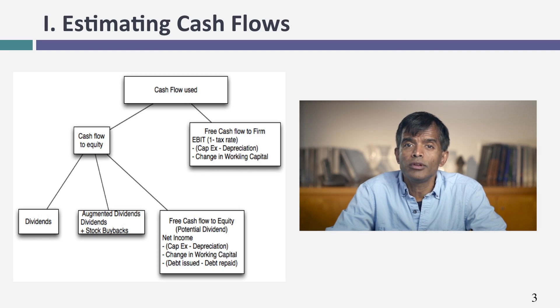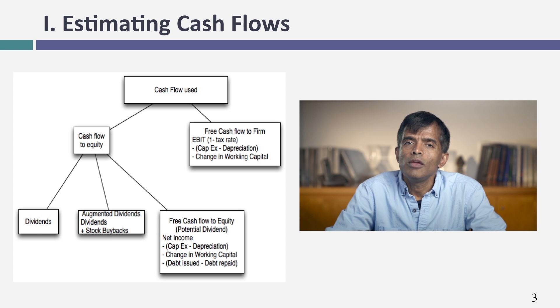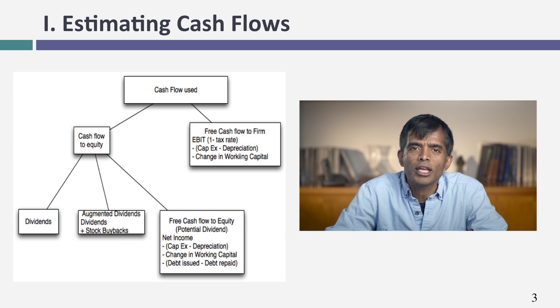Let's think about estimating cash flows. Remember in the last session, we talked about making a decision upfront: whether you're valuing the equity in the business or valuing the entire business. If you decide to value equity, here are your three choices for cash flows. You can look at actual dividends paid, but for most U.S. companies, dividends are only a small slice of the cash return. So you could use augmented dividends — adding buybacks to dividends — or you can try to estimate potential dividends, which is what free cash flow to equity is. If you're valuing the entire firm, then you're trying to estimate a pre-debt cash flow.